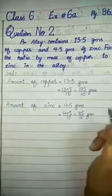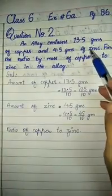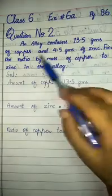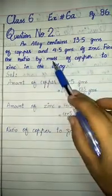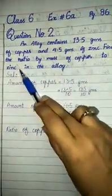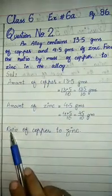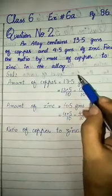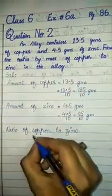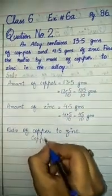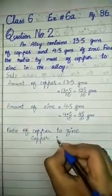Okay students, now we can compare. The question clearly mentioned that you have to find the ratio of the mass of copper to zinc. Copper first, zinc second. Now we will make the ratio of copper to zinc, which we have. Copper to zinc.